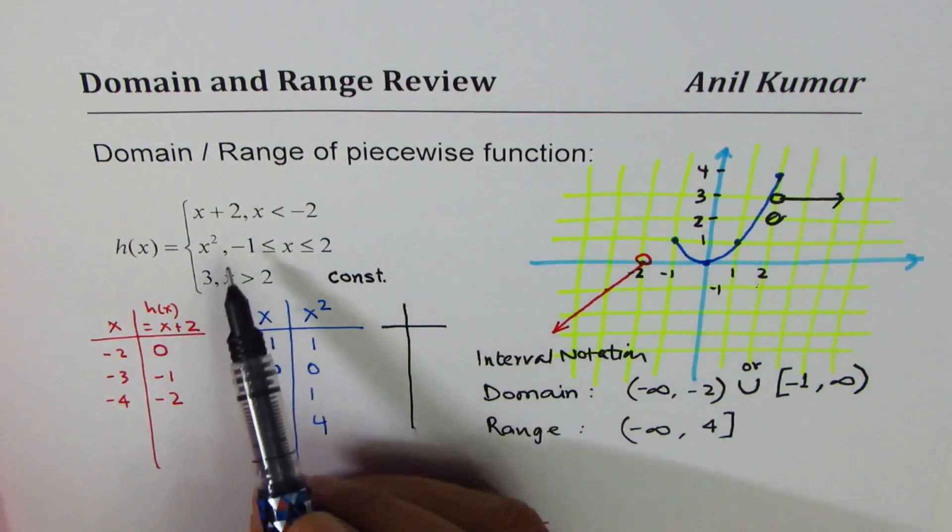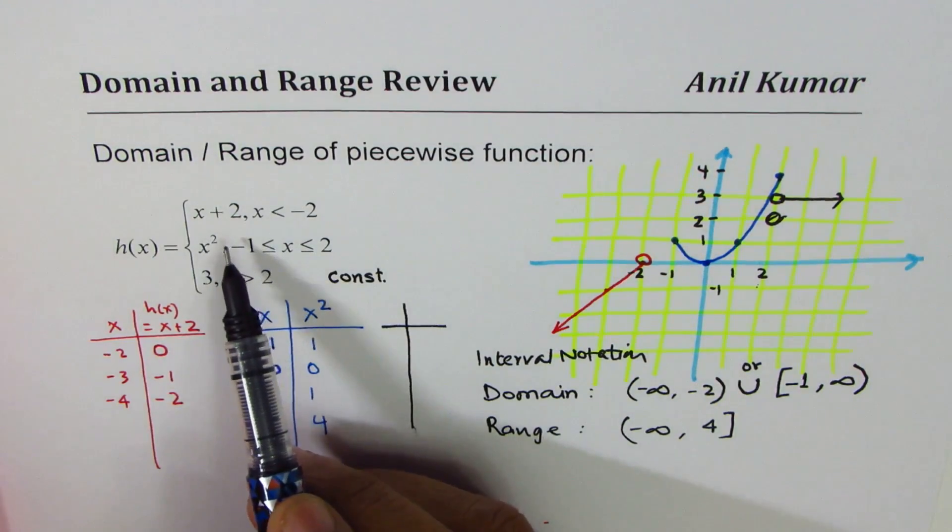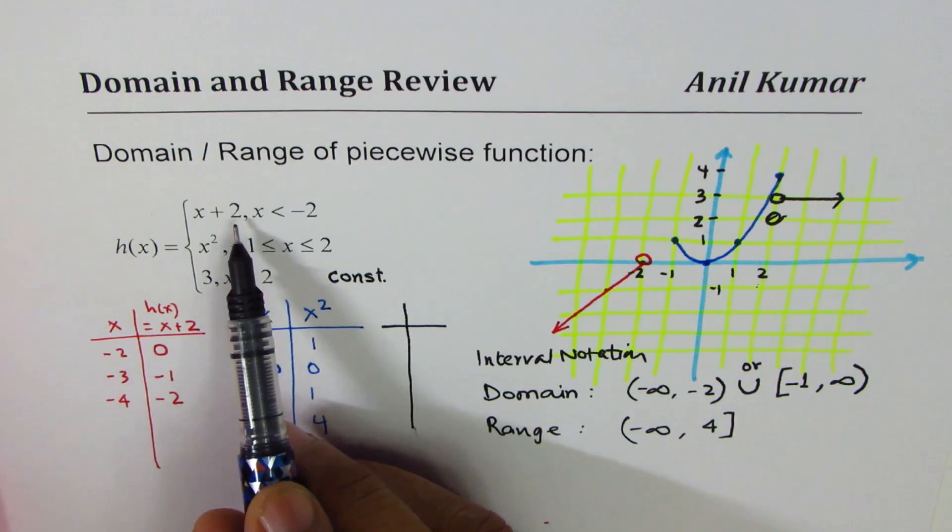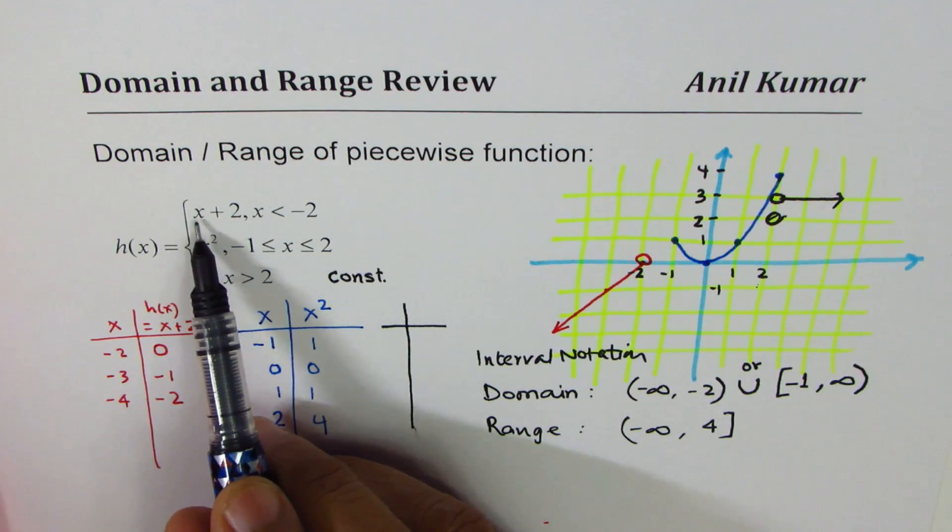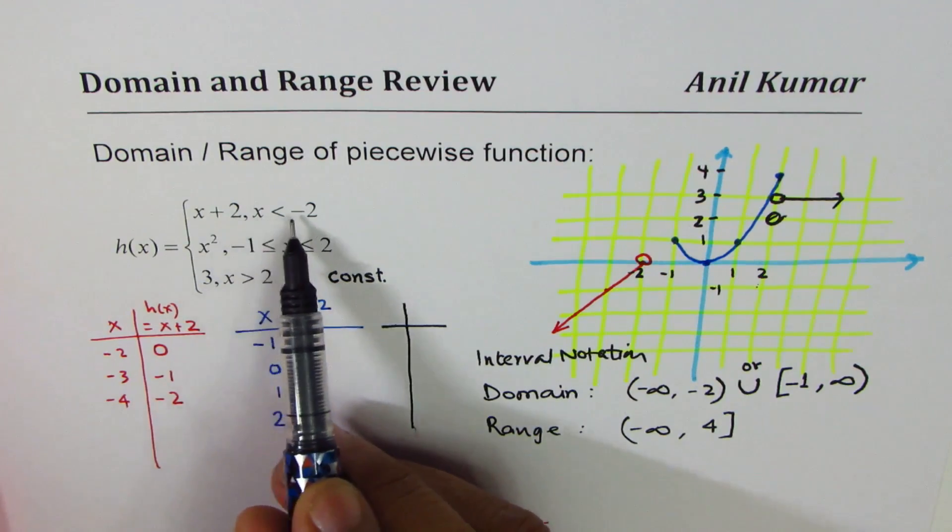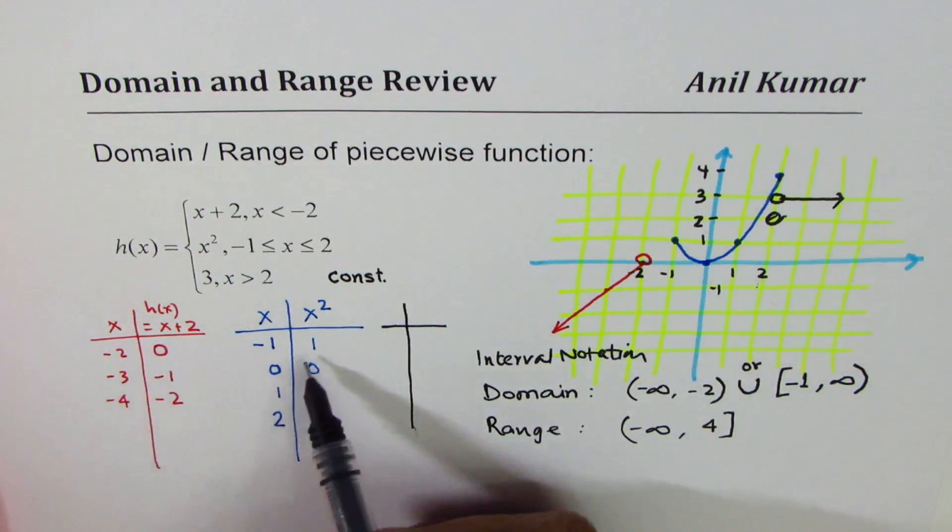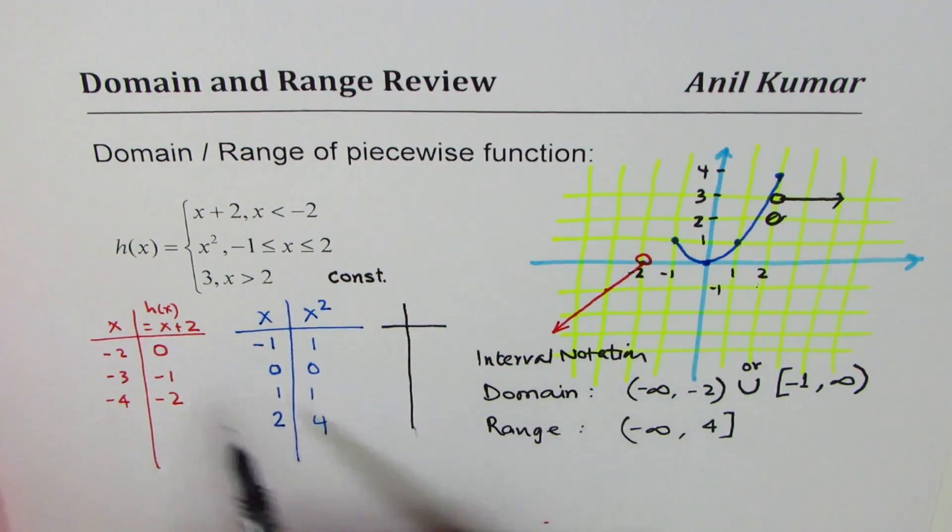Now, for sketching, you could have also used your knowledge about straight line, slope and intercept. X plus 2 means y-intercept of 2, slope of 1, but you should begin from x minus 2. So it's a good idea to use tables. It becomes simpler at times.